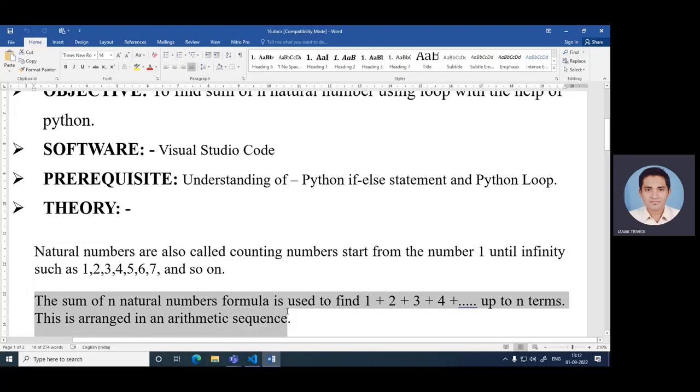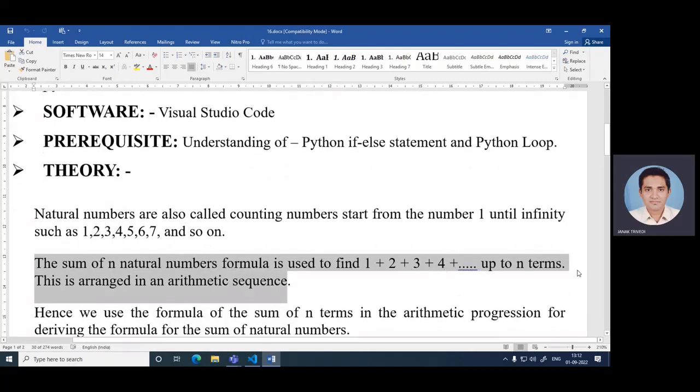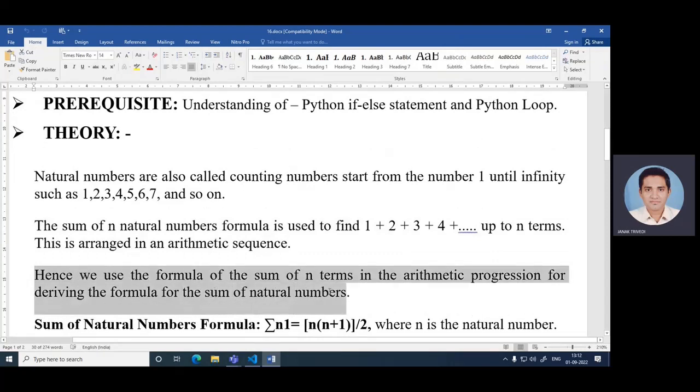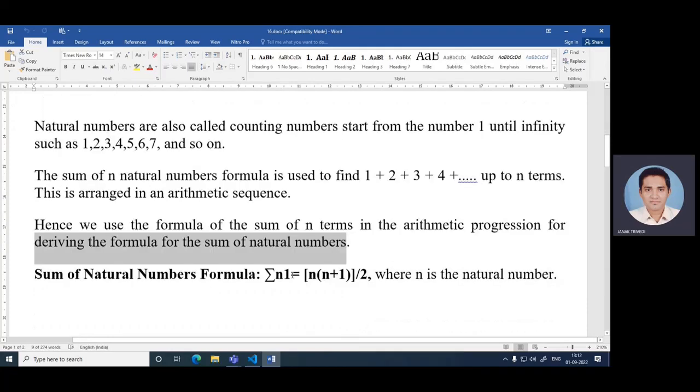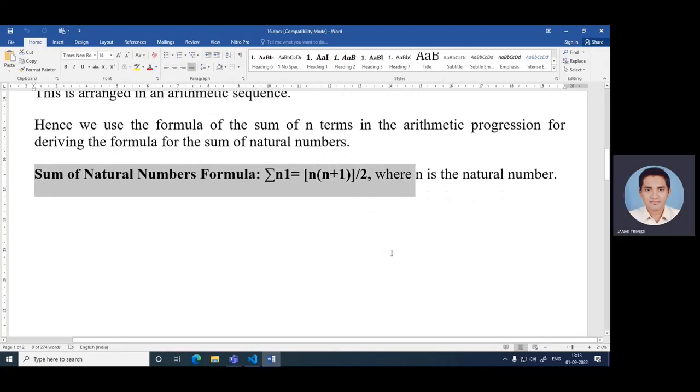The sum of n natural numbers formula is used to find 1 + 2 + 3 + 4 up to n terms, which is arranged in an arithmetic sequence. We use the formula of the sum of n terms in arithmetic progression. The formula is given as Σn = n(n+1)/2, where n is the natural number.